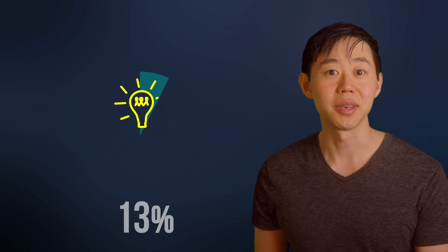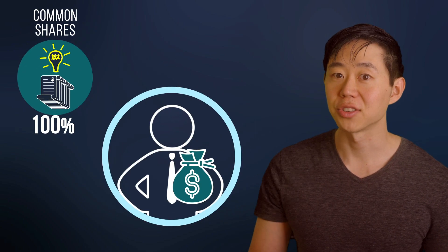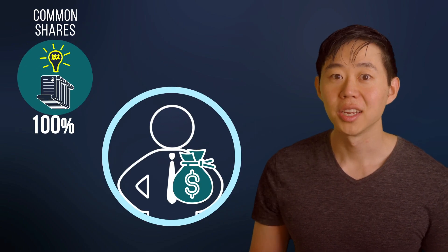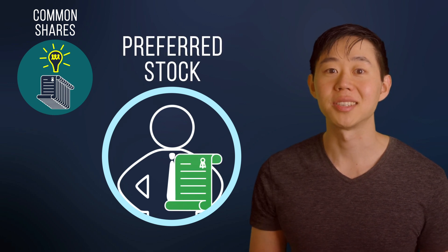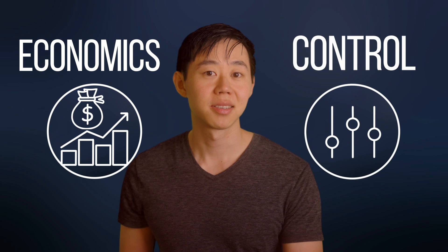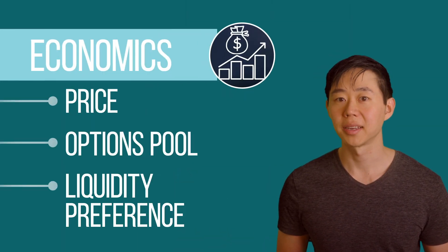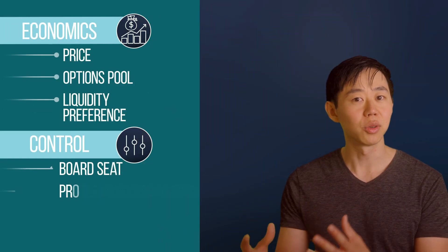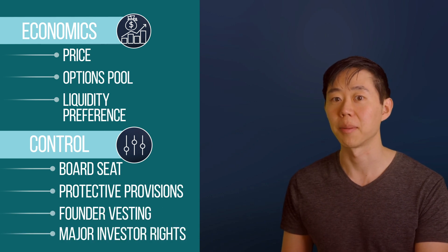When you first start your company, you own 100% of it in common shares. When you raise money from investors in a price round, you're selling them newly-issued shares called preferred stock that has special rights attached to it. As part of that transaction, there are really two things you need to negotiate with investors: economics and control. Economics is everything that relates to how much money the investor will make, and control is everything that relates to how investors can affect important decisions for the company.